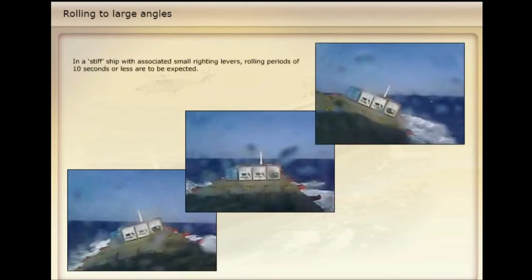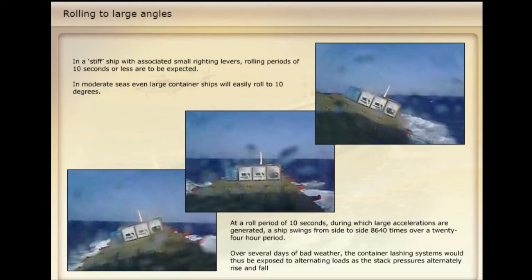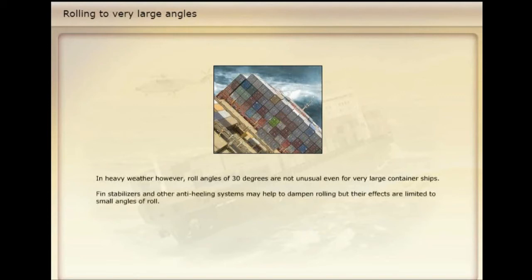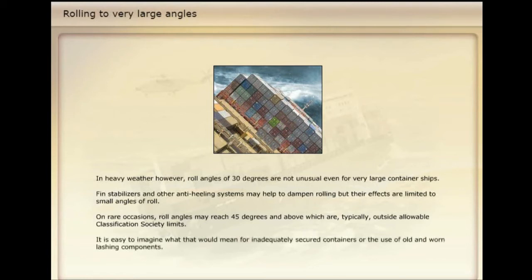In a stiff ship with associated small righting levers, rolling periods of 10 seconds or less are to be expected. In moderate seas, even large container ships will easily roll to 10 degrees. At a roll period of 10 seconds, during which large accelerations are generated, a ship swings from side to side 8,640 times over a 24-hour period. Over several days of bad weather, the container lashing systems would thus be exposed to alternating loads as the stack pressures alternately rise and fall. In heavy weather, roll angles of 30 degrees are not unusual, even for very large container ships. Fin stabilizers and other anti-heeling systems may help to dampen rolling, but their effects are limited to small angles of roll. On rare occasions, roll angles may reach 45 degrees and above, which are typically outside allowable classification society limits.